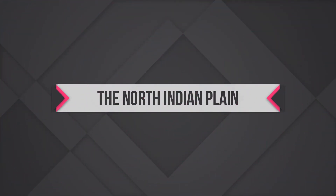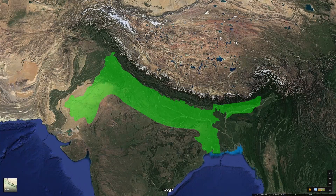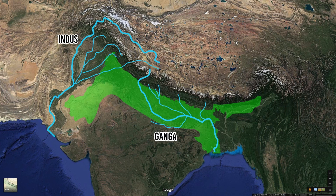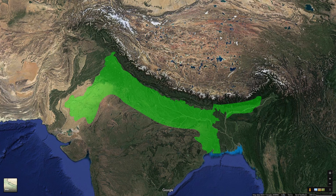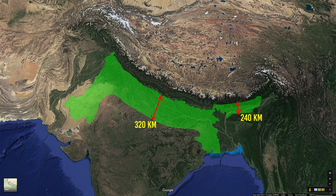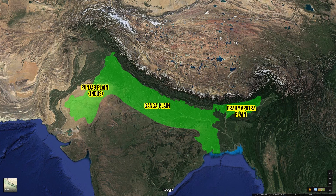Next, we are going to see about the Northern Indian Plains. The North Indian Plains were formed by the depositional work of rivers like the Indus, Ganga, and Brahmaputra. The Northern Plains are approximately 2400 km long and vary in width from 240 to 320 km. They are divided into three sections: the Punjab Plains, Ganga Plains, and Brahmaputra Plains.